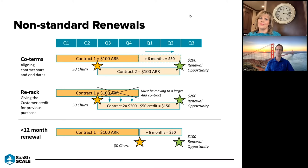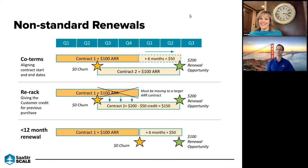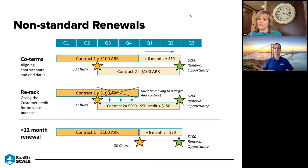Going into even more detail, there's the concept of non-standard renewals, bucketed into three groups. These are relatively common — anyone working in SaaS or renewals will have seen variants of these. The first is co-termination: you have one contract with a specific start and end date, and the customer wants to combine that with another contract so they don't have to manage two separate renewal processes. You bring those two start and end dates together.